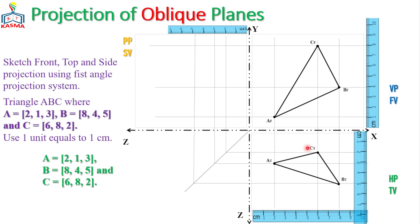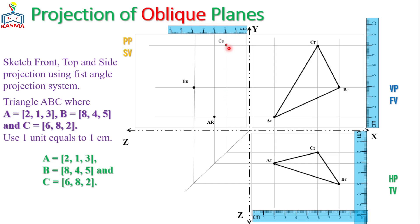For the side view, each point is projected using the Y and Z coordinate system. Point A is 1 in Y and 3 in Z, placed at that position — giving the right side view of A. Point B is 4 in Y and 5 in Z, placed on the corresponding horizontal line. Point C is 8 in Y and 2 in Z. Once connected, this gives the projection of triangle ABC on the profile plane as the right side view.